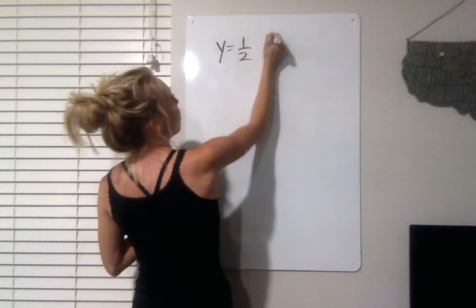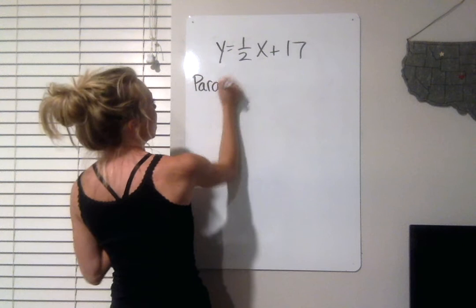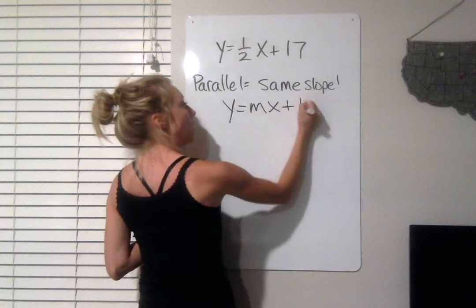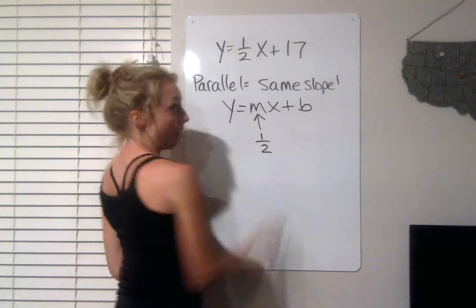Now, if they're parallel, that means same slope. So that means our line is going to have a slope that's the exact same. It's going to be 1 half. Number 8 says that our line also has to pass through 8 negative 4.